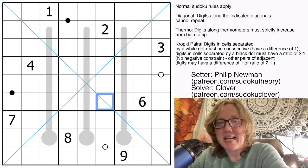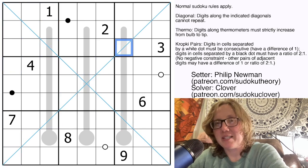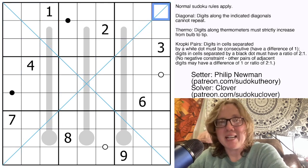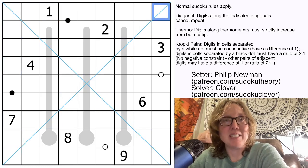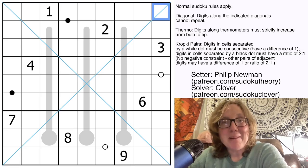And on top of that, we also have these blue marked diagonals. And in this puzzle, digits cannot repeat along either of these diagonals. Or in other words, each diagonal contains the digits 1 through 9 once each, just like in a row, column, or region.